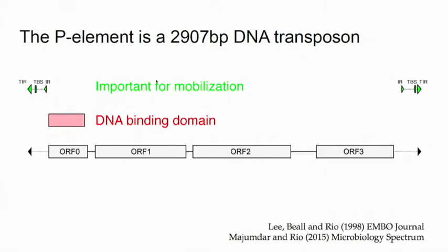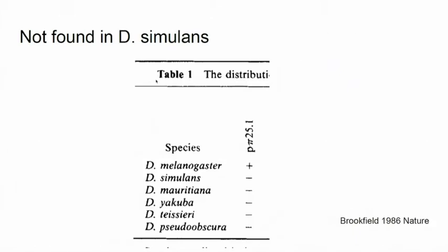In a bit more detail: the P element is a DNA transposon of about 3,000 base pairs. It has ORF0, ORF1, ORF2, and ORF3 — four ORFs. ORF0 was discovered a little bit later, which is why it starts at zero. Apart from the ORFs, it has terminal inverted repeats at each end and sequences important for mobilization — if these are missing it doesn't move. There is also a DNA-binding domain responsible for binding DNA.